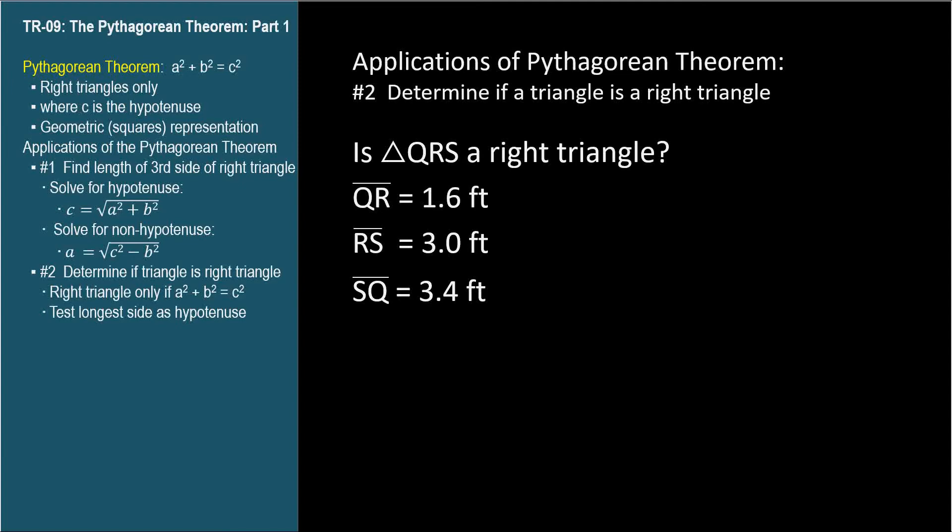In this case, we can assume that if triangle QRS is a right triangle, that side SQ is the hypotenuse, since it has the greatest length.